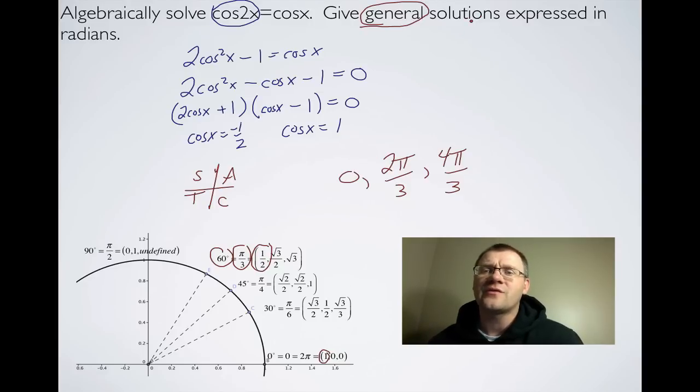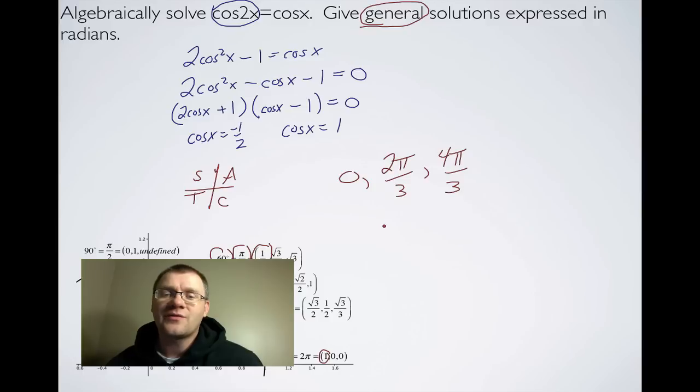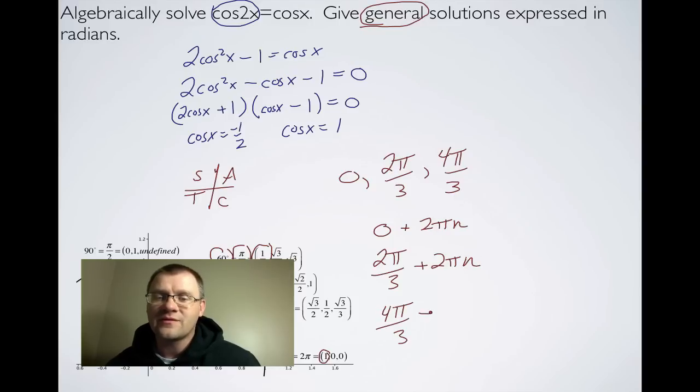So we need to write this as a general solution. So remember that for a cosx graph, that it repeats itself every 2π. So we actually have three answers: we have 0 + 2πn, we have 2π/3 + 2πn, and we have 4π/3 + 2πn.